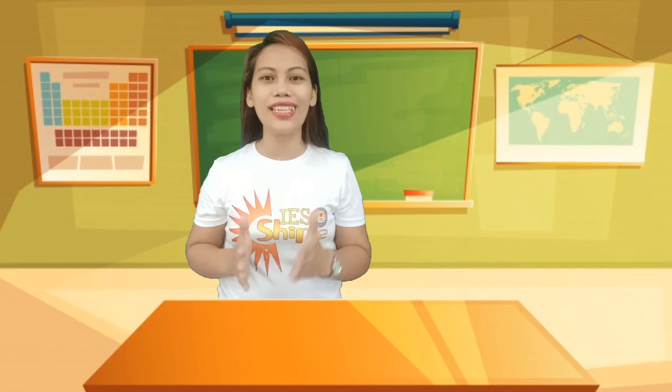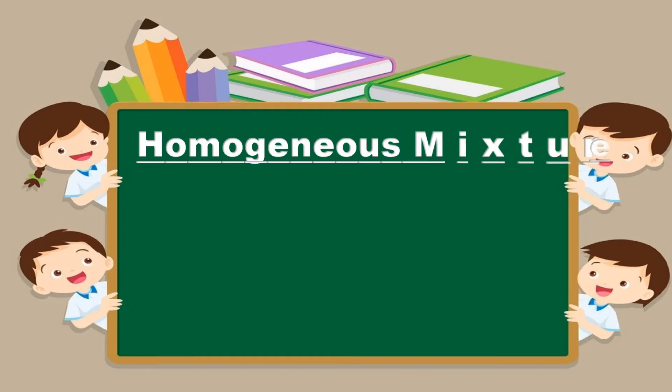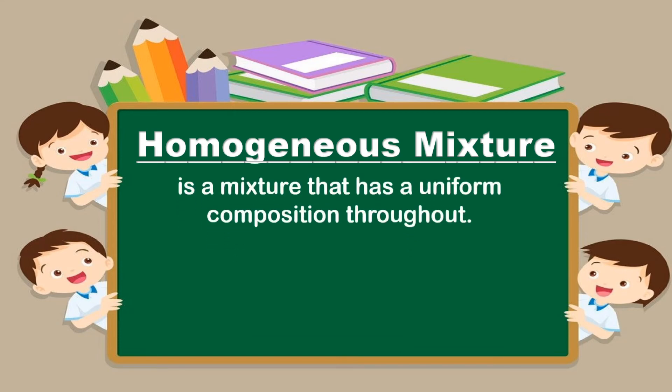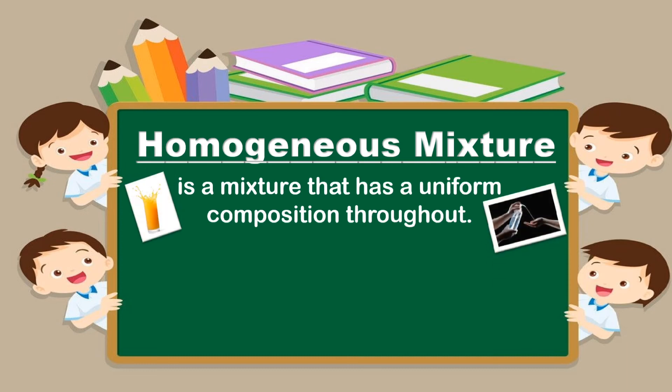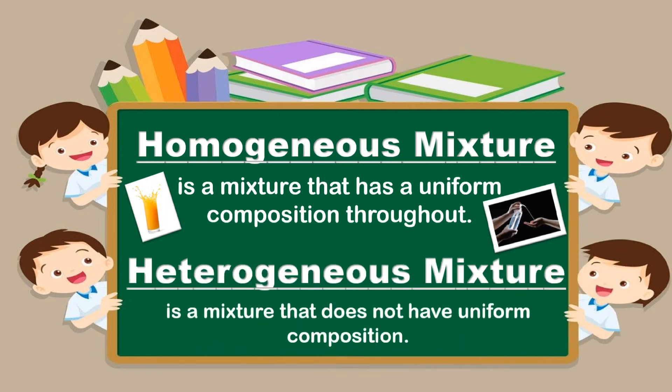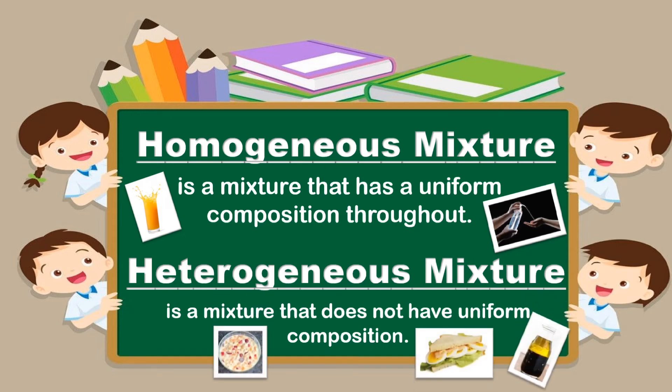If you look around you, especially in your kitchen, you will find many mixtures. And these mixtures could either be homogeneous or heterogeneous. Homogeneous mixture is a mixture that has a uniform composition throughout — just like the orange juice in the glass and the alcohol you use to disinfect. A heterogeneous mixture is a mixture that does not have uniform composition — just like the fruit salad, the sandwich, and the soy sauce and oil in a bottle. I hope this short lesson will help you in answering the activities that your teacher will give you about homogeneous and heterogeneous mixtures.